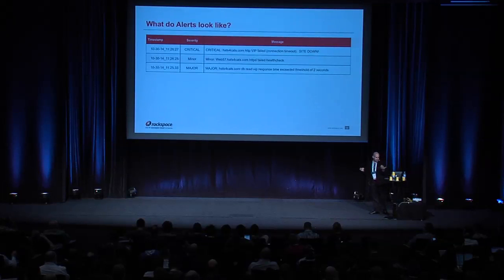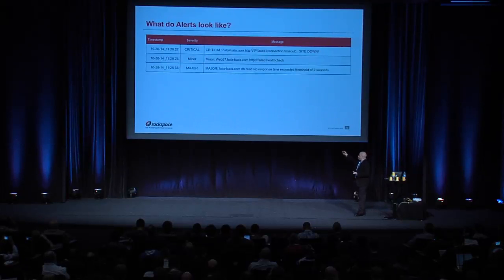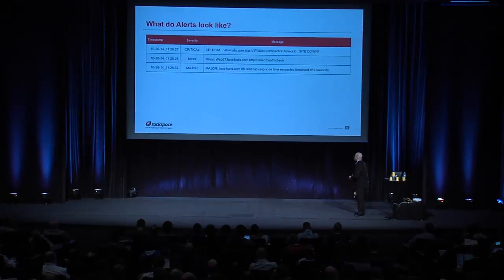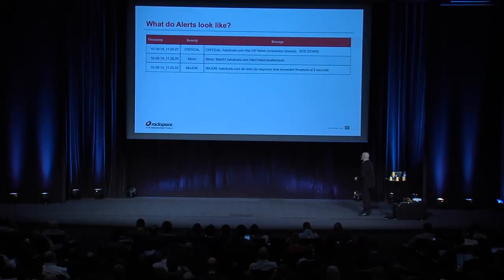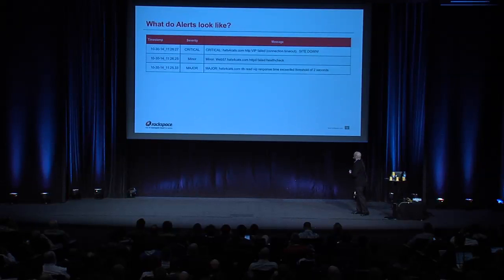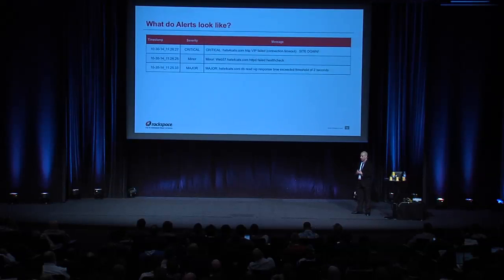Here's an example of what some alerts might look like, made up of a timestamp, a severity level, and a message — possibly also a host. In this case, our flagship website hats4cats.com is currently down: the HTTP VIP is failing, one of the web servers is failing health checks, and the dbreed VIP response time is exceeding the threshold of two seconds.